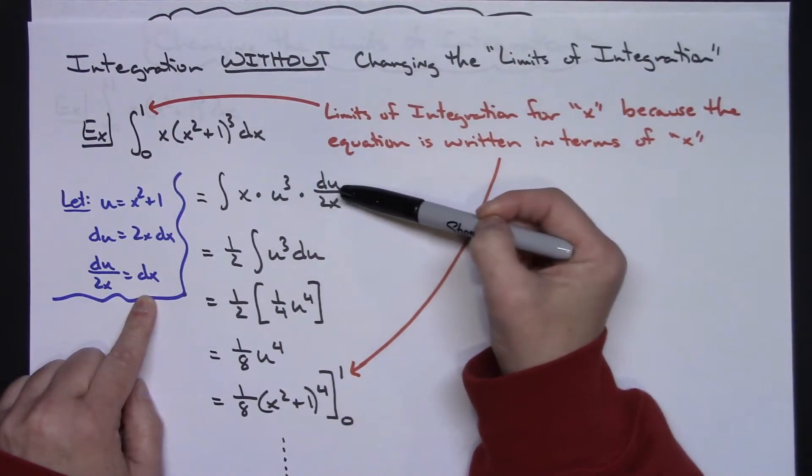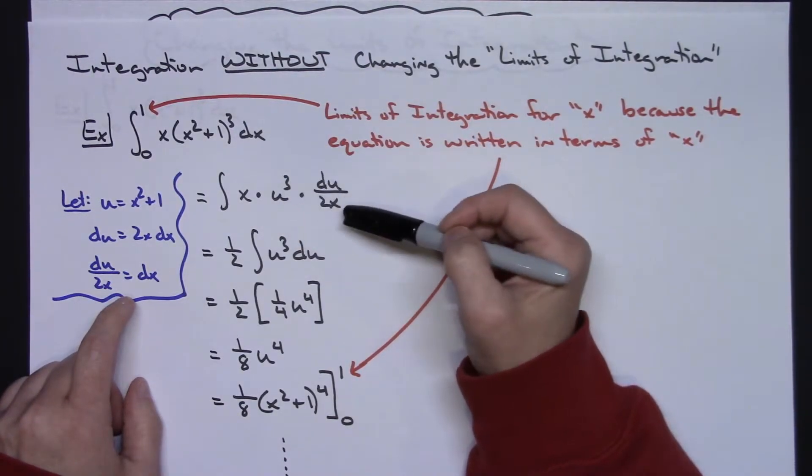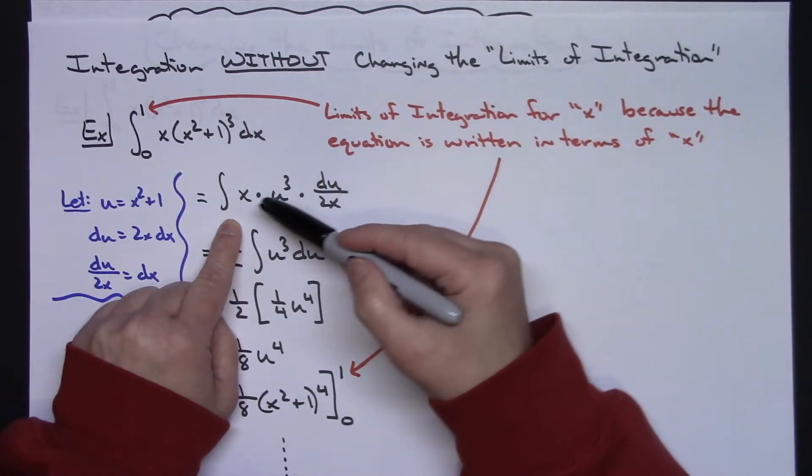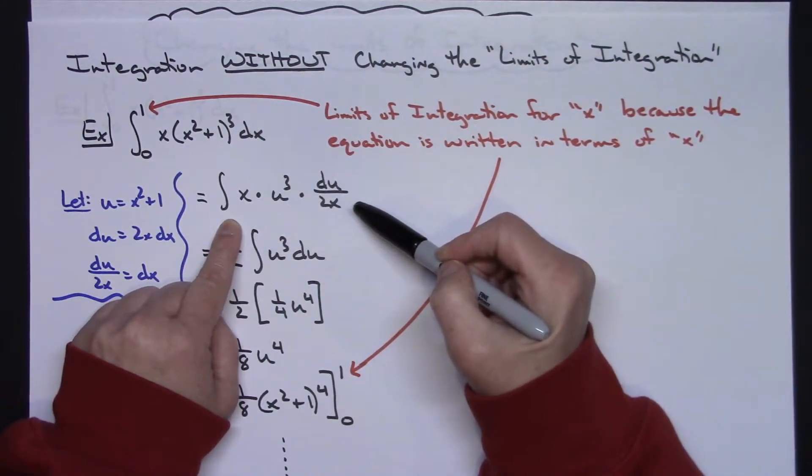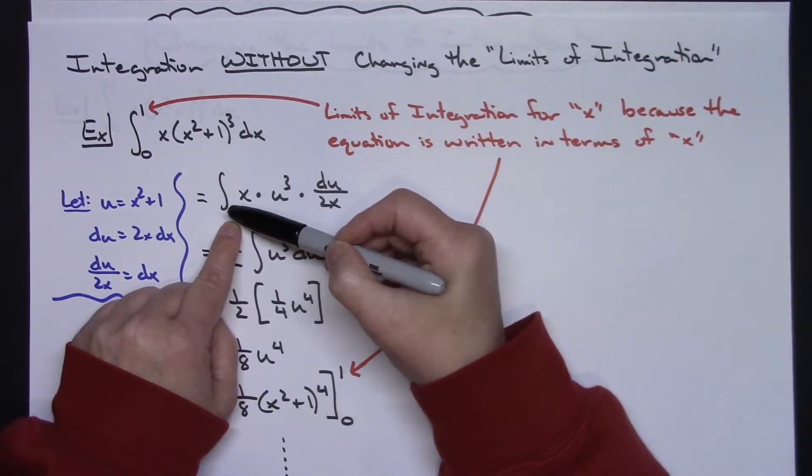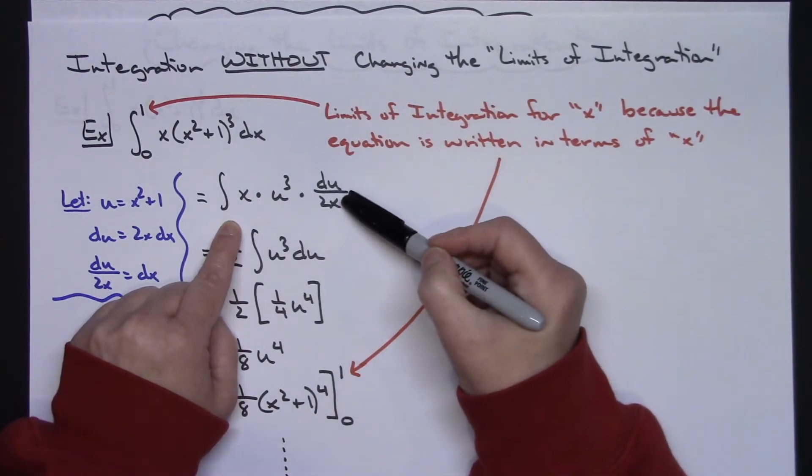When my students go to replace their u's and use their u in here to see some of the arithmetic, I make them remove the 0 and 1. Because especially at this part right here, I've got u's and x's mixed around in there all together. And so I can't have limits of integration for x because this is no longer in terms of x. I've got x's and u's at this point.